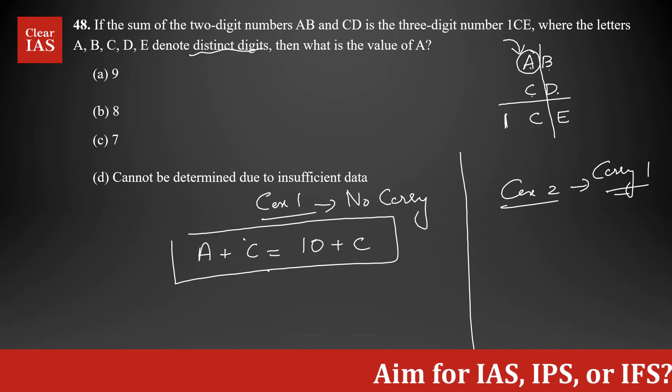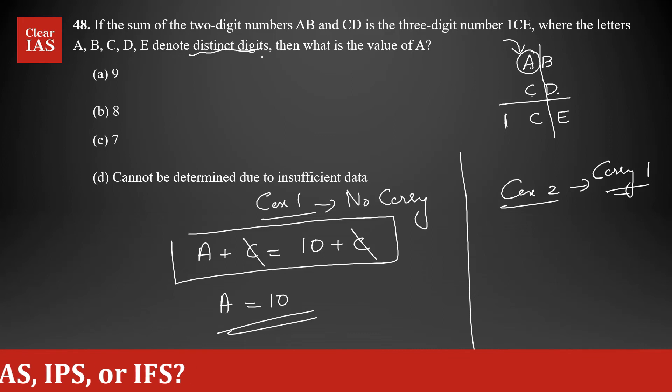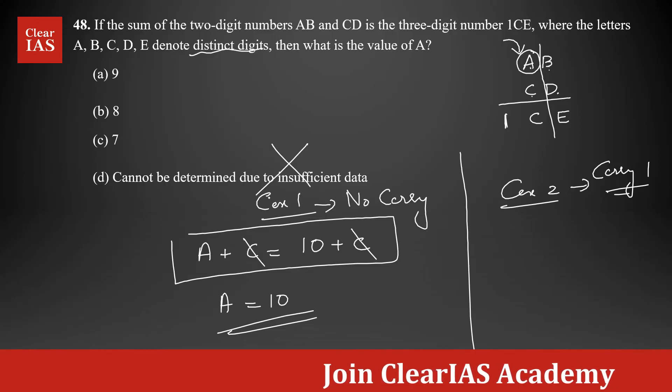So this is what you are getting. So that means, if you simplify it, C is getting cancelled, you are getting the value of A will be equal to 10. We clearly know that A is a single-digit number. So that means this case is not possible. So I don't need to consider case 1.